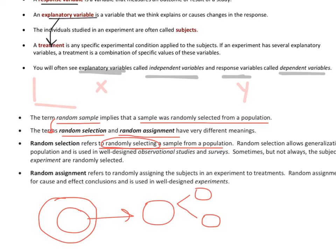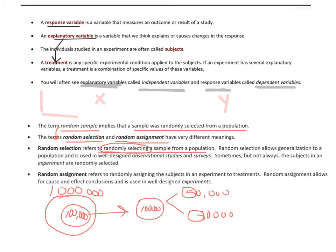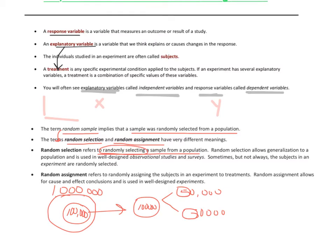For example, if the population were a million people in a town, you would select something like a hundred thousand people. Then you would pull that hundred thousand people out and break them into groups of fifty thousand — randomly breaking them up. This randomness is key because random selection allows us to generalize our results to the population. You always want your sample to behave like the population, and as long as you have random selection you're ensuring that generalization factor.